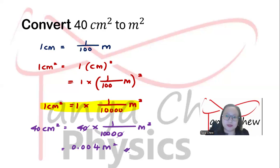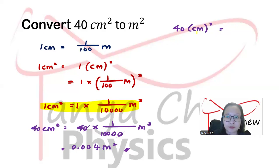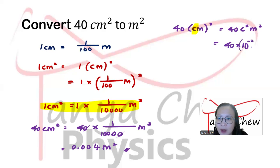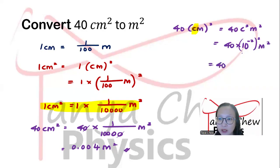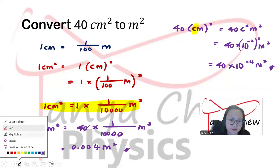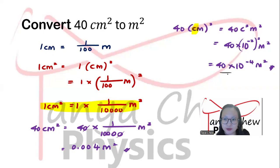Using the physics method: write 40 cm². The prefix c (centi) carries 10⁻². So cm² means (10⁻² × m)², which equals 40 × (10⁻²)² × m² = 40 × 10⁻⁴ m². If you convert to standard form, shift the decimal point to get 4.0 × 10⁻³ m². Both methods give the same answer.